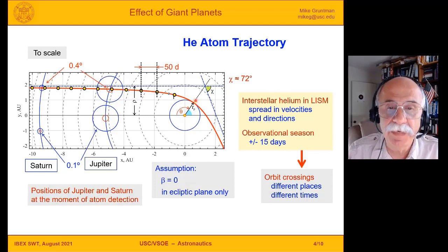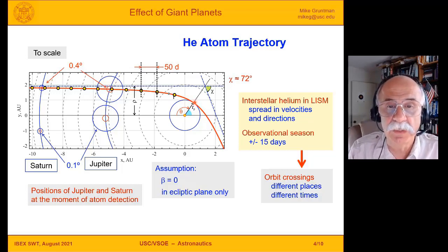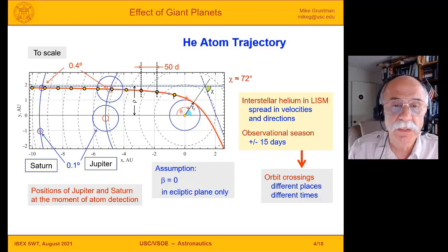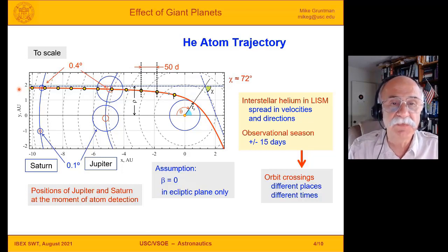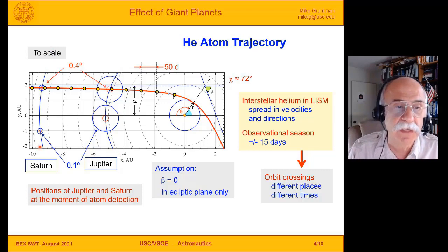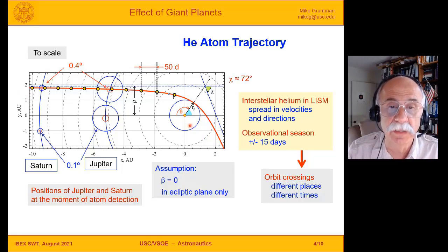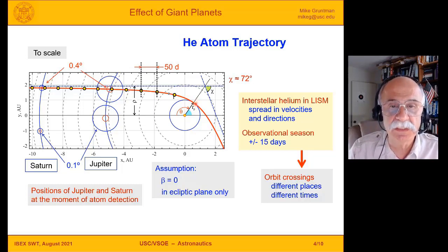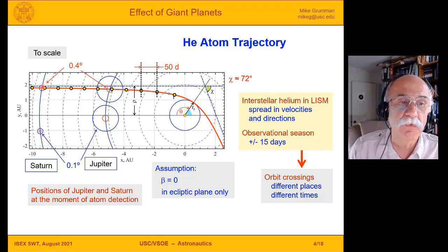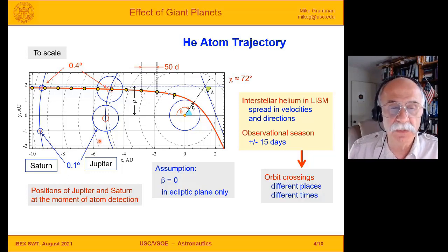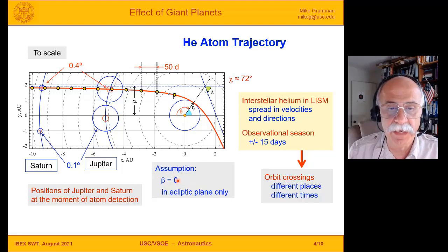If I look at the observation of a helium atom as it approaches the most advantageous point, where the hyperbolic trajectory of the helium atom is tangential to the Earth's orbit, the red line shows such a trajectory going to infinity. This figure is to scale. Jupiter's orbit is around 5 astronomical units, and Saturn's orbit is close to 10 astronomical units. The yellow dots show time tags 50 days apart. It takes roughly 250 days for a helium atom to reach the observation point at 1 AU from crossing Jupiter's orbit, and about 500 days from crossing Saturn's orbit. In this work, I assumed that the interstellar wind vector is in the ecliptic plane, so the ecliptic latitude of incoming atoms is 0.